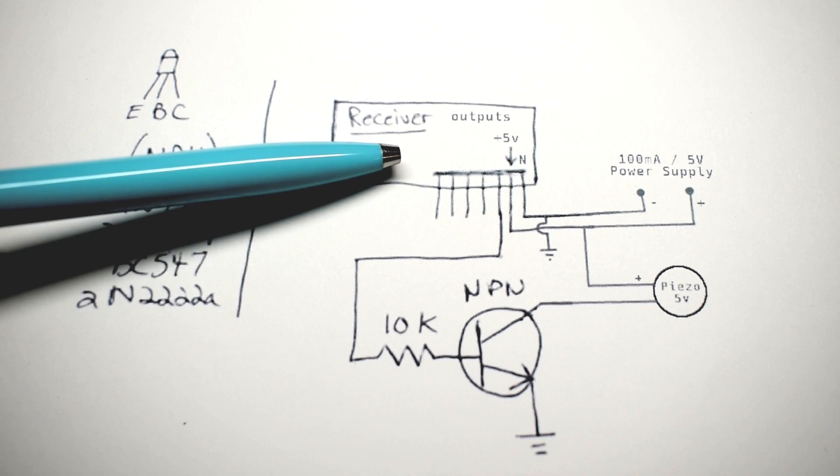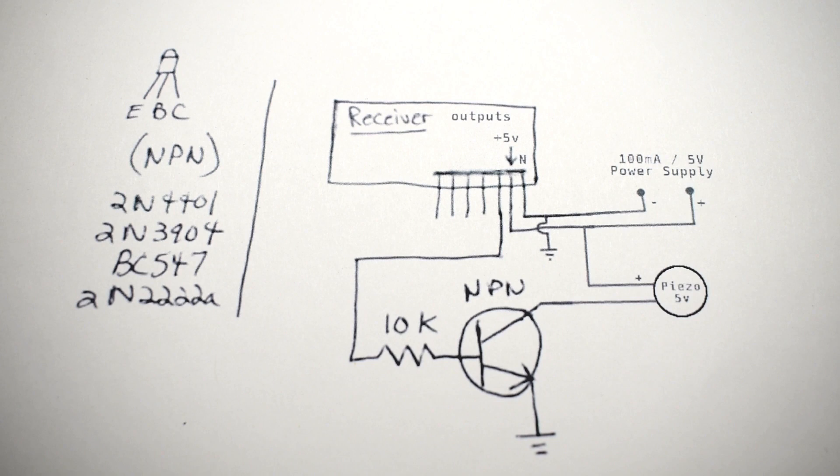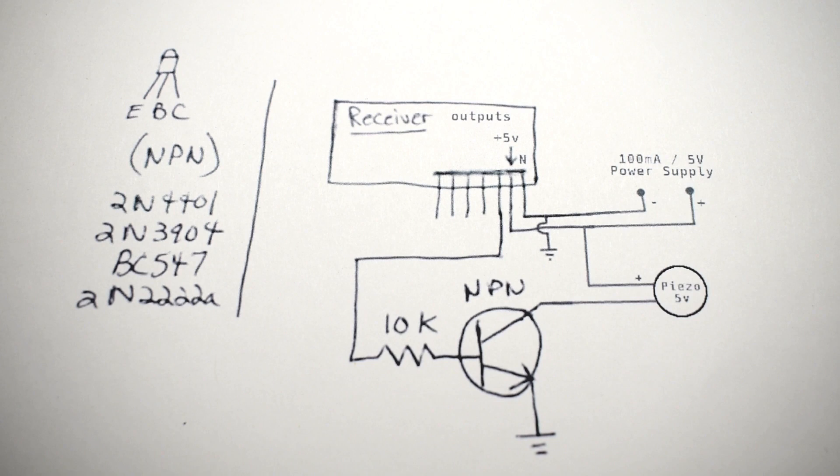Other transmitter and receiver modules can be used. Besides this 315 MHz module, I just happen to have a bunch of these laying around. And guys, that is it.